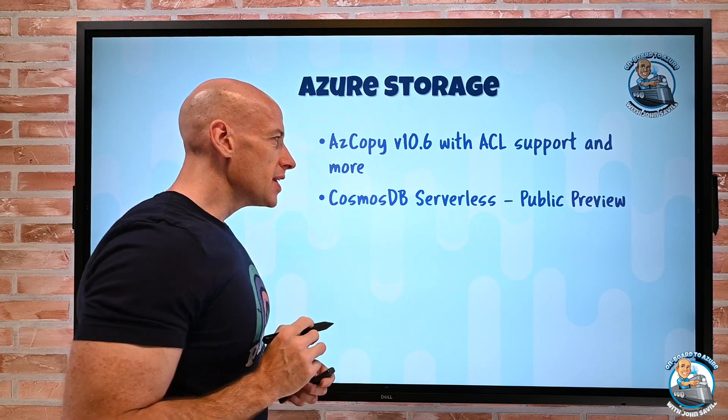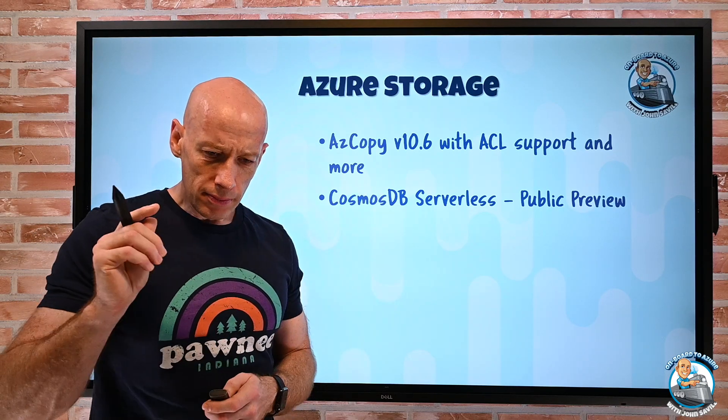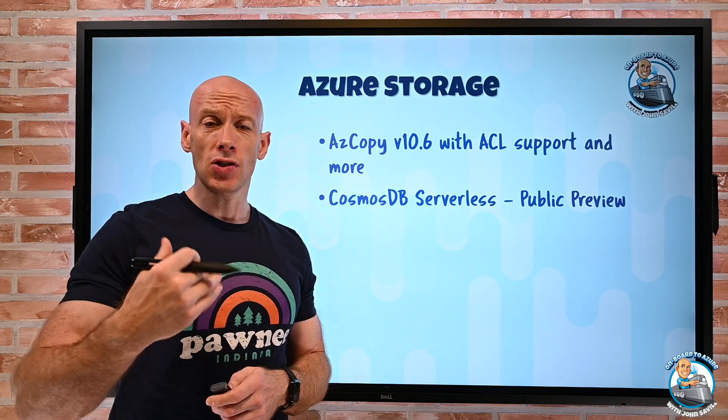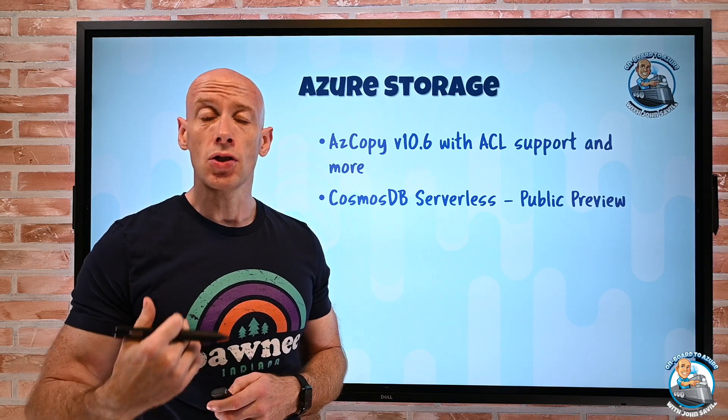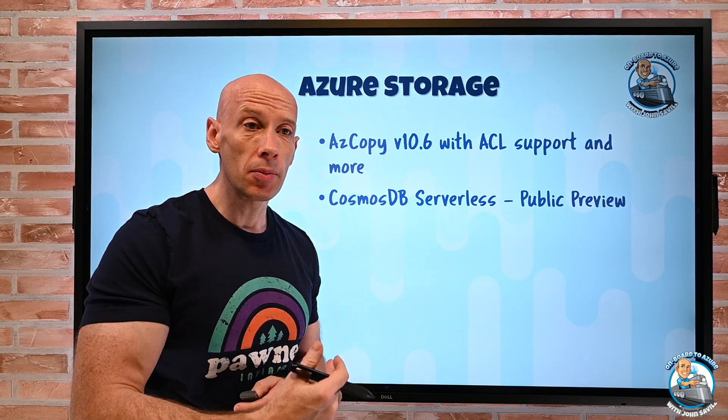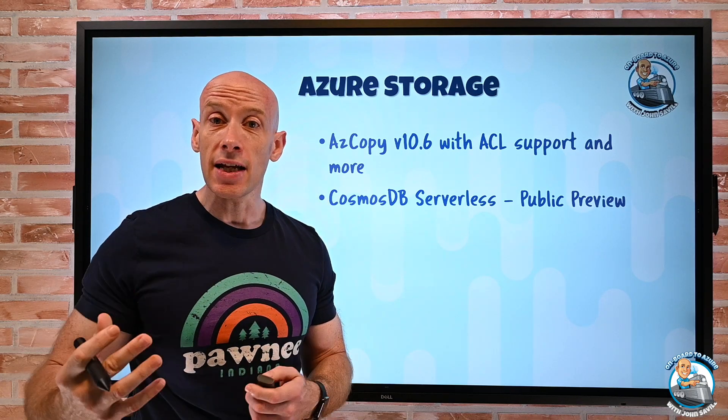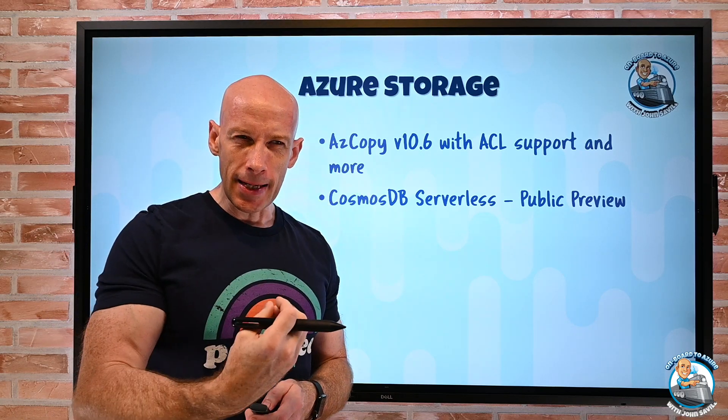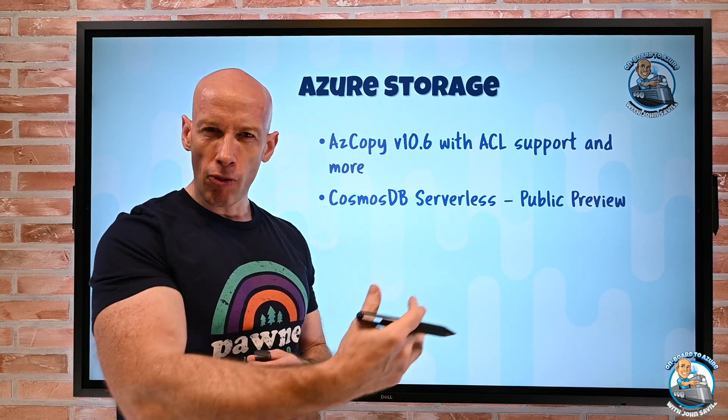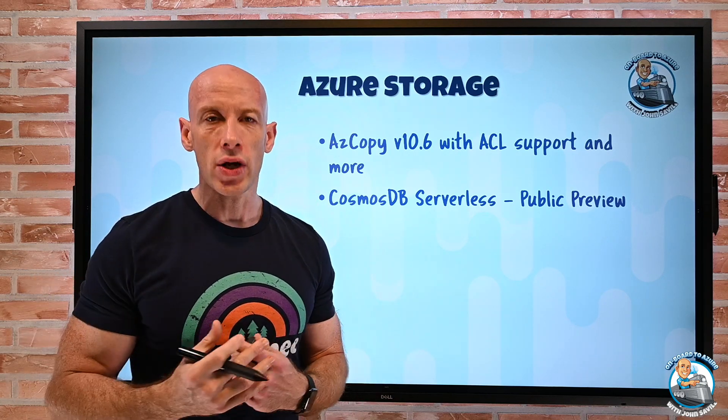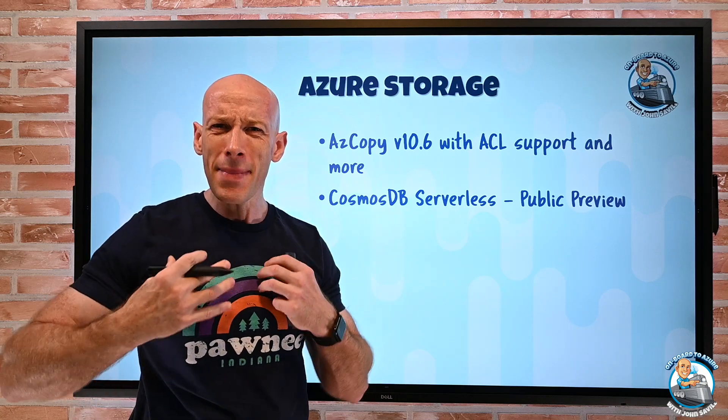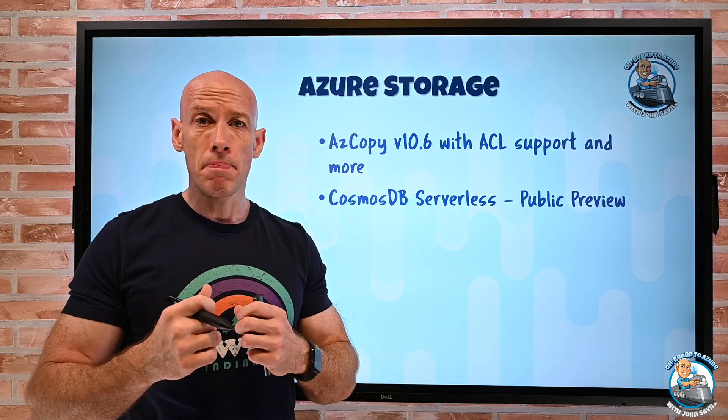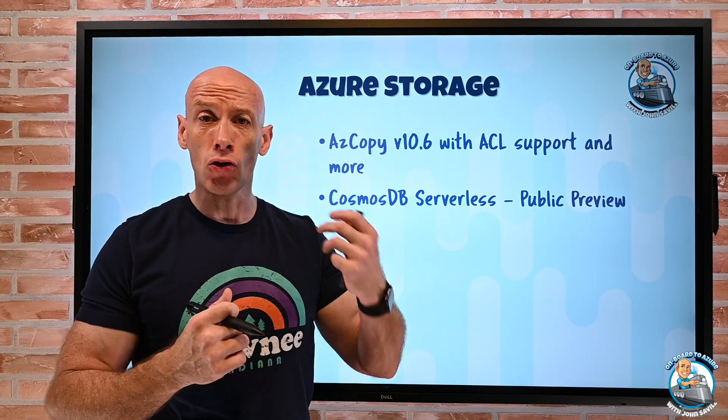The Cosmos DB serverless is in public preview. Now Cosmos is phenomenal. It supports a whole bunch of different types of APIs if I need graph storage, columnar, document, table, etc. But ordinarily, I have to use these request unit things that every time I do some operation, it uses a certain amount of request units. And they can be very hard to understand how many do I actually need. I had to provision them up front. So I would maybe pay for too many, or I wouldn't do enough, and then I'd be throttled.